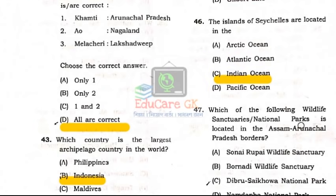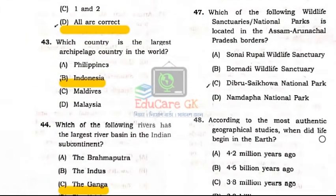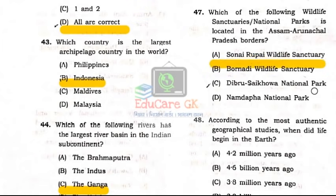Question Number 47: Which of the following wildlife sanctuaries and national parks is located on the Assam–Arunachal Pradesh border? Option A: Honai Rupai wildlife sanctuary is located on that border.